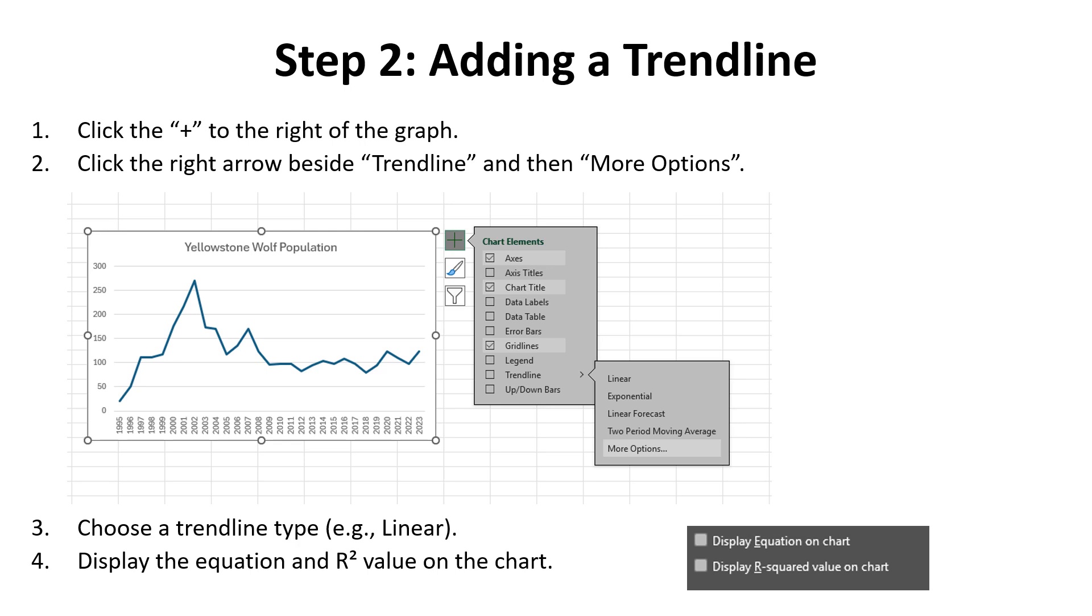I select the arrow to the right and More Options. This will allow me to select any of the different types of trendlines. Once you've chosen your trendline type, it's really helpful to display both the equation and the R-squared value on the chart.